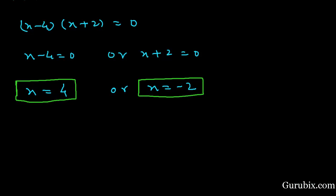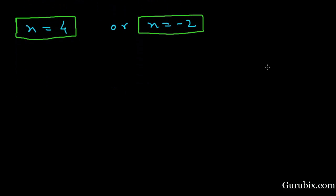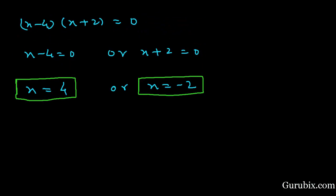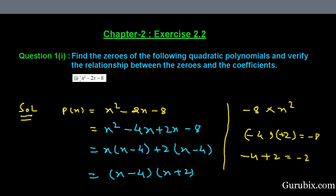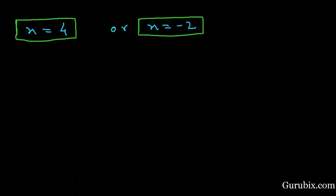Now we shall identify the coefficients of the given polynomial, which are 1, minus 2, and minus 8. And now we shall verify the relationship between the zeros and the coefficients.